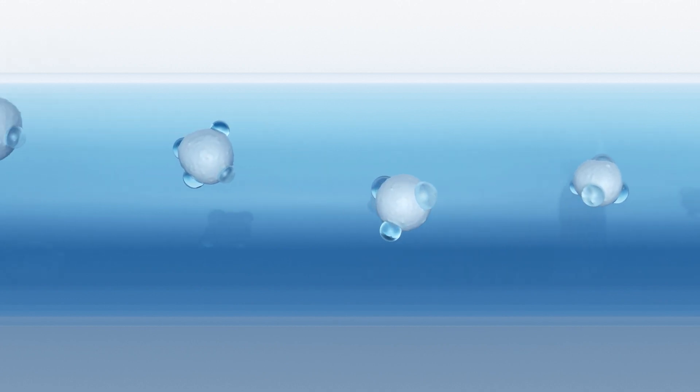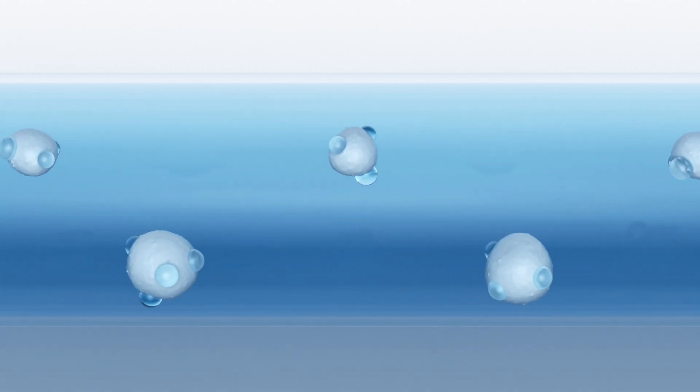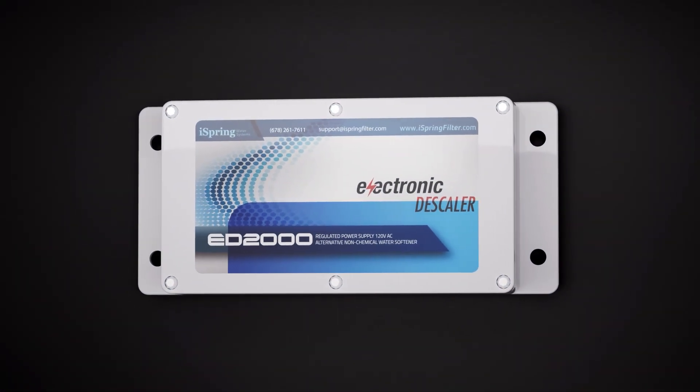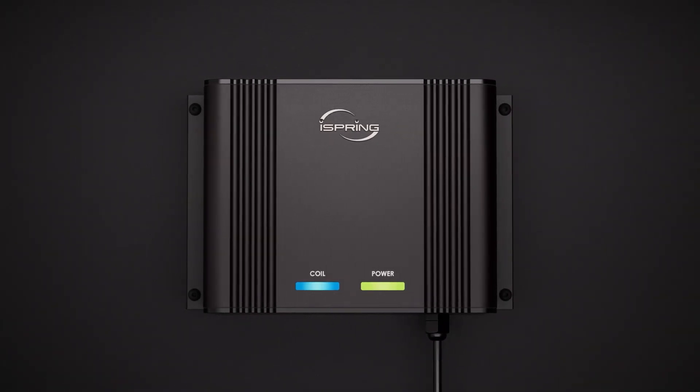These scale deposits will never return, saving the life of your expensive appliances and plumbing fixtures. The EDV2 is an upgraded version of our best-selling ED2000 electronic water descaler.